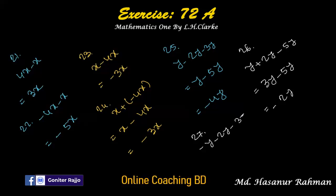Number twenty-seven: minus y minus 2y minus 3y. Every sign is the same — all negative — so we add: 1 plus 2 plus 3 is 6y, and the symbol is negative: minus 6y.